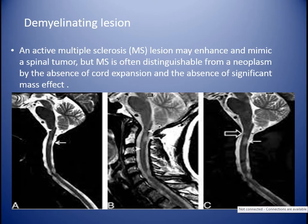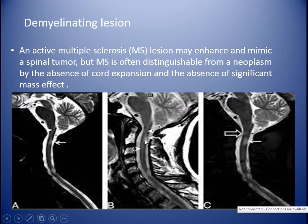Demyelinating lesions — an active multiple sclerosis lesion — may enhance and may mimic a spinal tumor. However, it is distinguishable by not causing significant mass effect or cord expansion. There will be a hyperintense signal in T2-weighted image without cord expansion; just the signal intensity will be changed. MS is the most common demyelinating lesion in the differential diagnosis of intramedullary lesions. Others include transverse myelitis and ADEM.